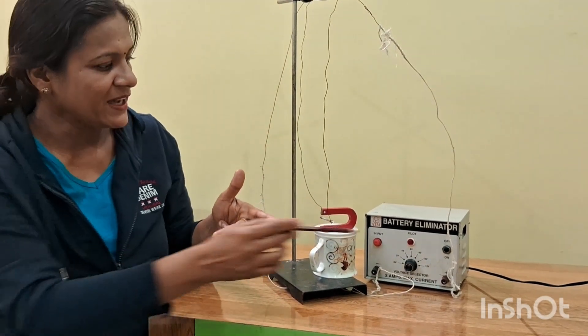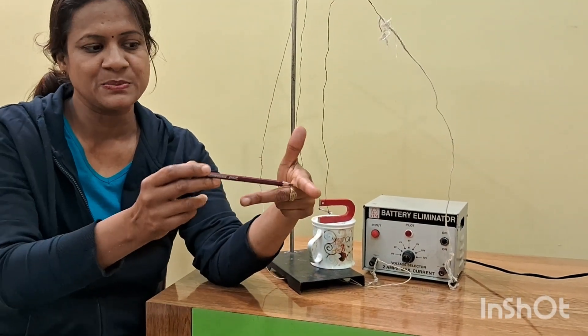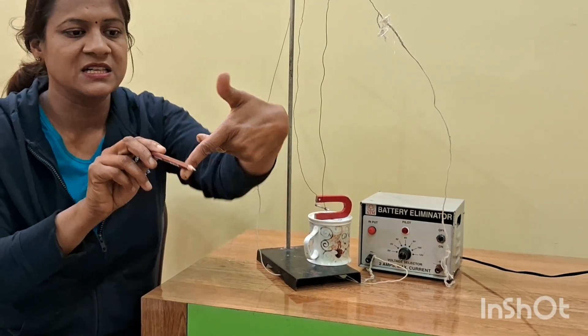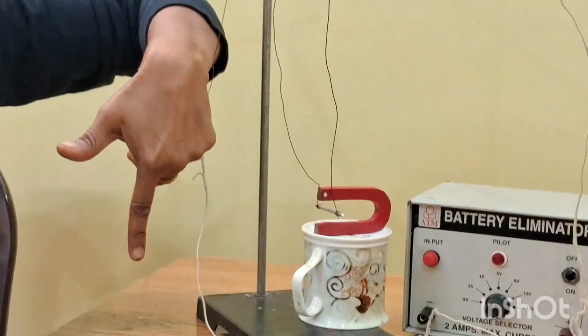So here in this case, current is flowing towards this side in the wire. So my finger is backwards. Magnetic field is pointing downwards. So here my thumb is pointing towards this side.